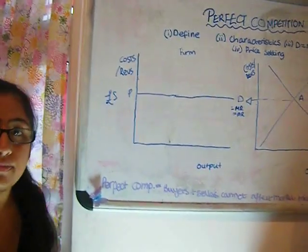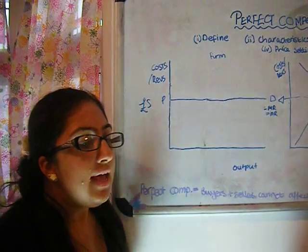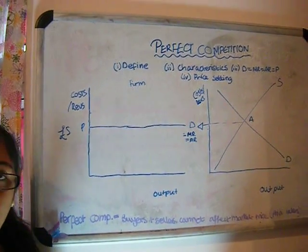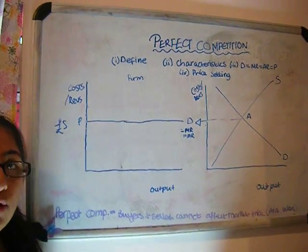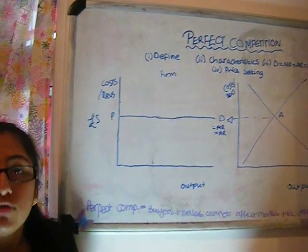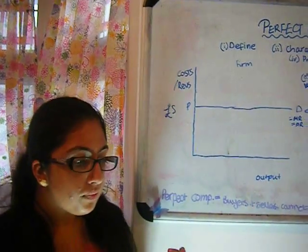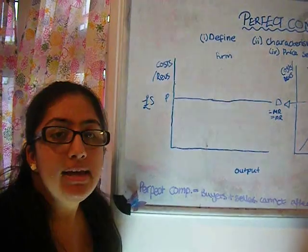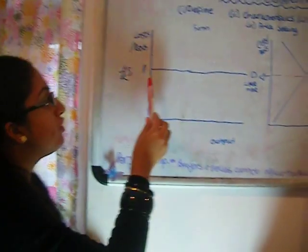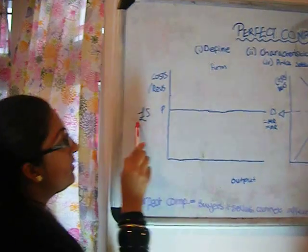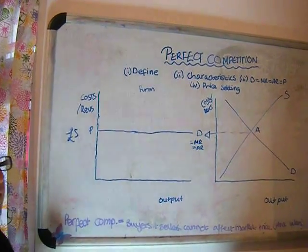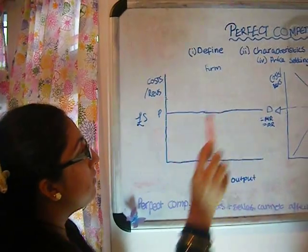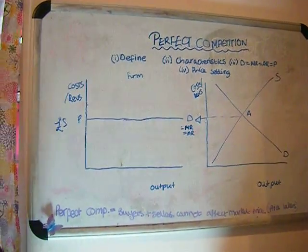Average revenue is the same as price because average revenue is the money we receive for one product, and the price is the money we receive for one product. Therefore they're the same. And marginal revenue too is the same because it is the money we receive for selling one extra unit. Now if we sell one extra unit as we mentioned before, price is not going to change. Price is still going to be £5. Therefore we will be receiving £5. This is why price equals demand equals marginal revenue equals average revenue.